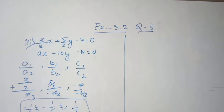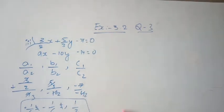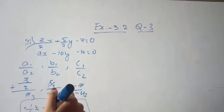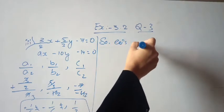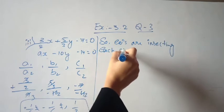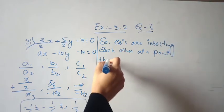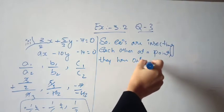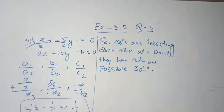Next, the third question: (3/2)x plus (5/3)y minus 7 equals 0. Compare the ratios a1/a2, b1/b2, and c1/c2. Here all three are not equal to each other. So the conclusion is the equations are intersecting each other at a point. They have only one possible solution. Hence, the given equations are consistent.